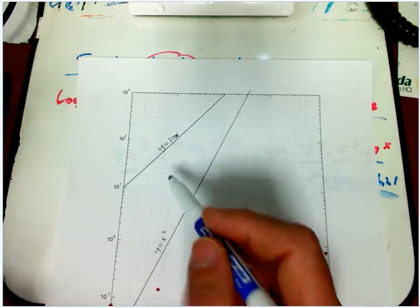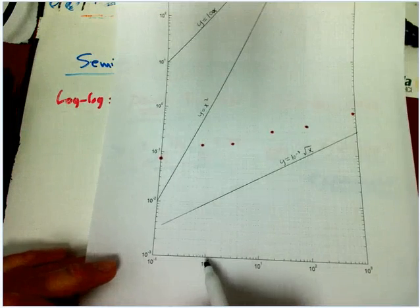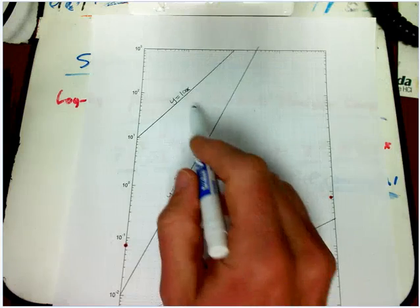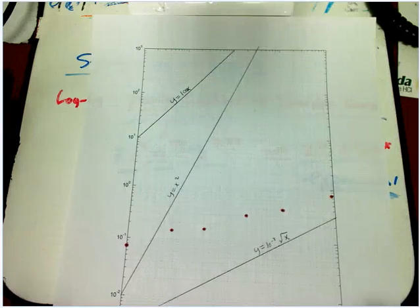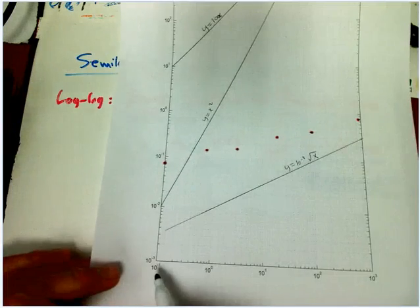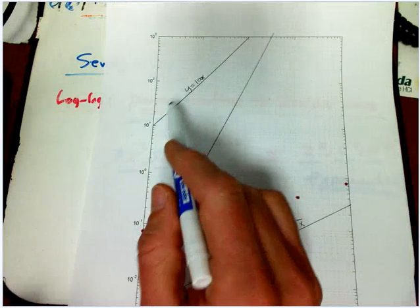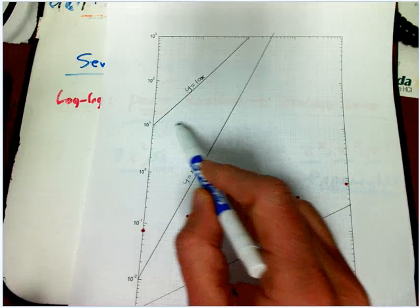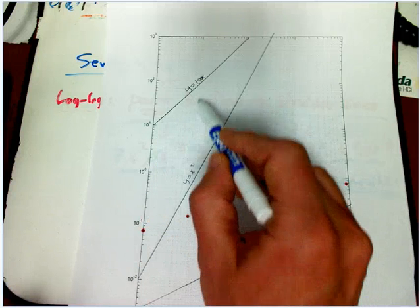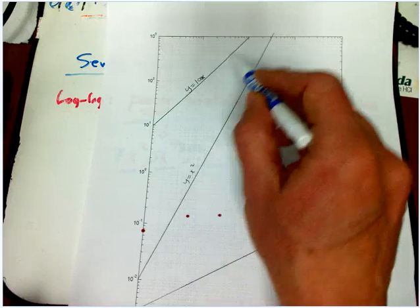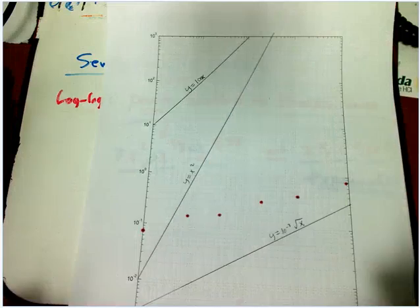For example, y equals 100x. If you put in one, you're going to get 100. If you put in 10 to the minus one, 100 times that is 10 to the one. And every time you go over by one power of ten, x goes up by a power of ten, and the whole thing goes up by one.